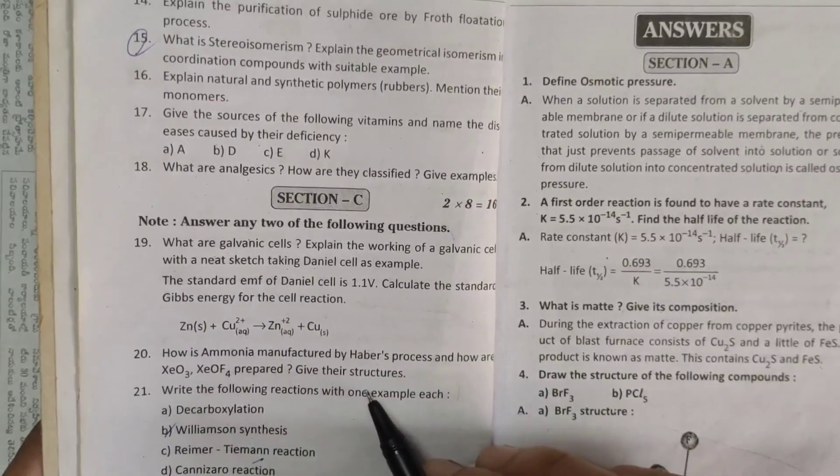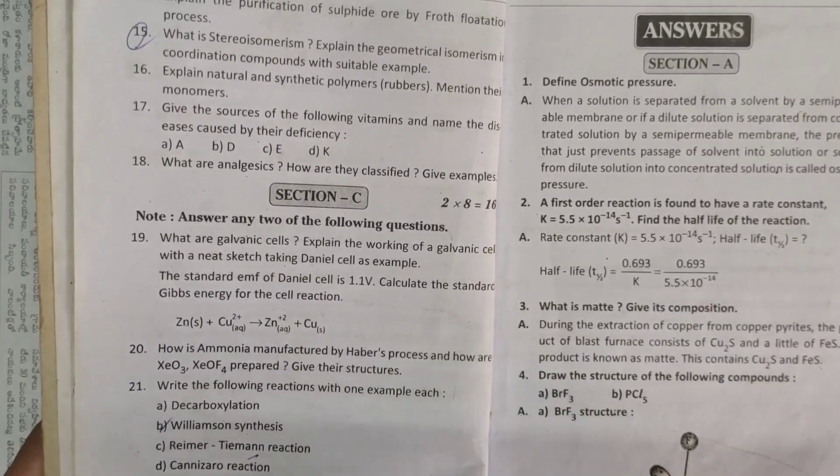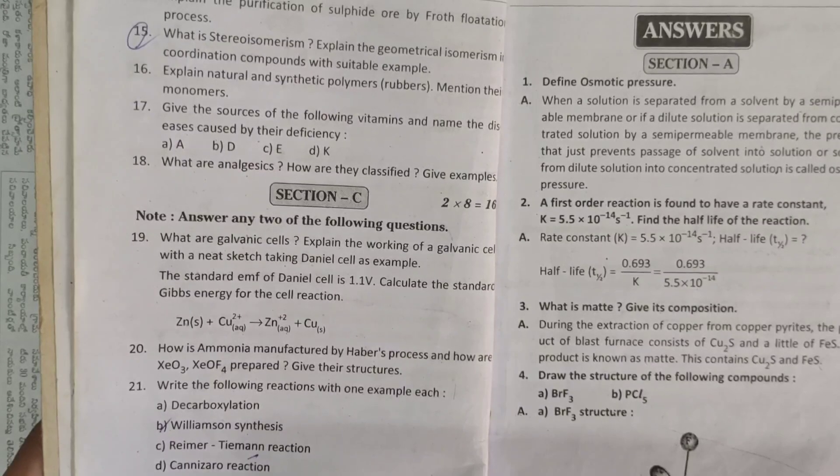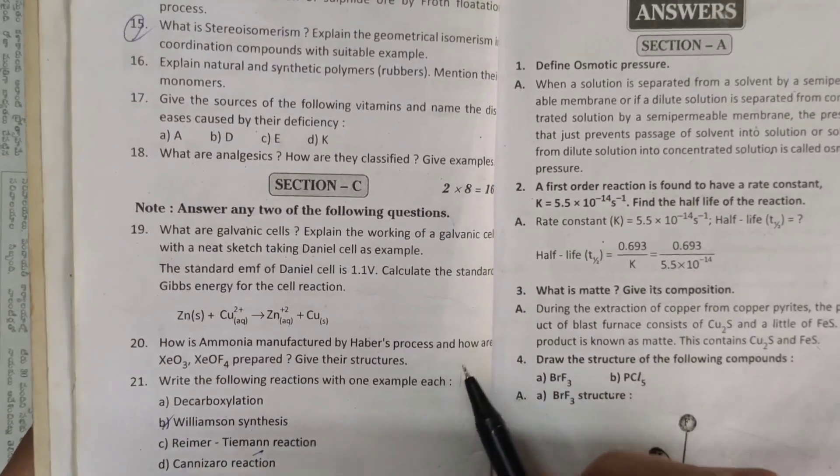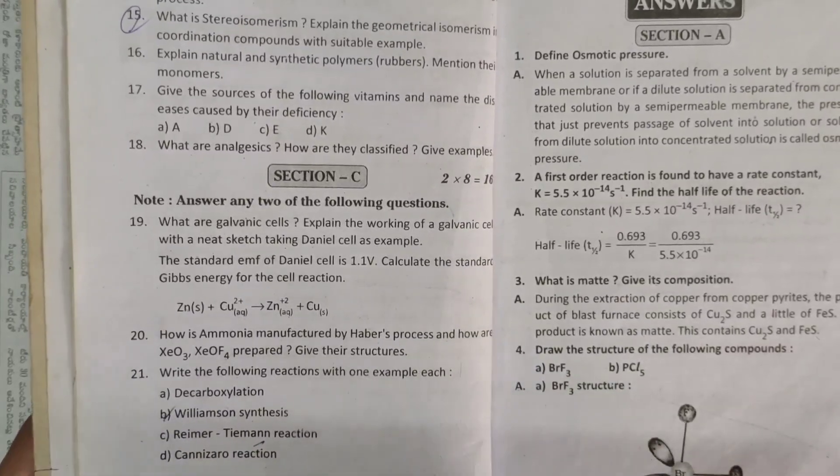And next one, how is ammonia manufactured by Haber's process, and how are XeO3, XeOF4 prepared, give their structures. Very easy, just check this, question is very easy, this is very important.